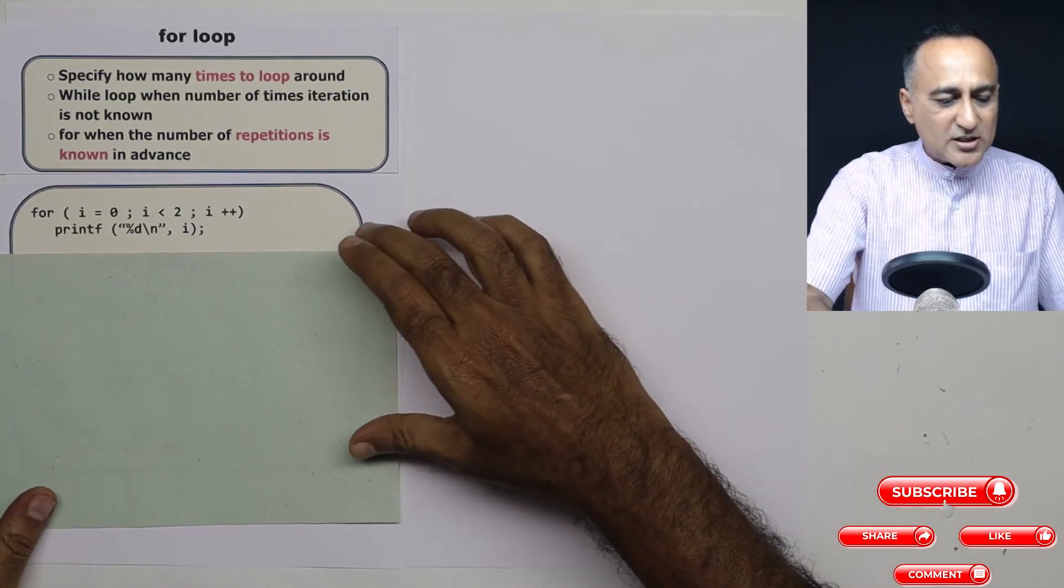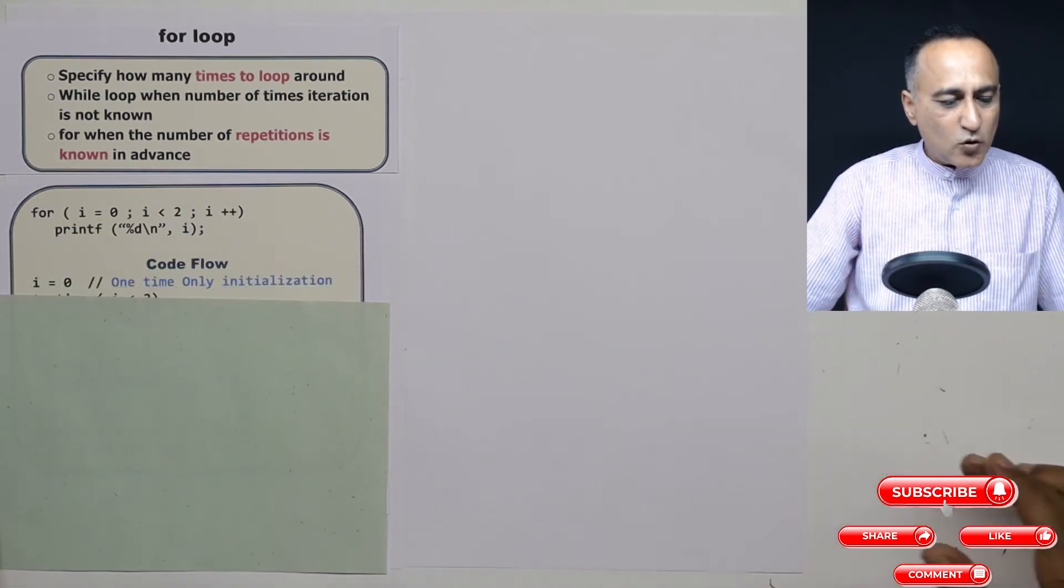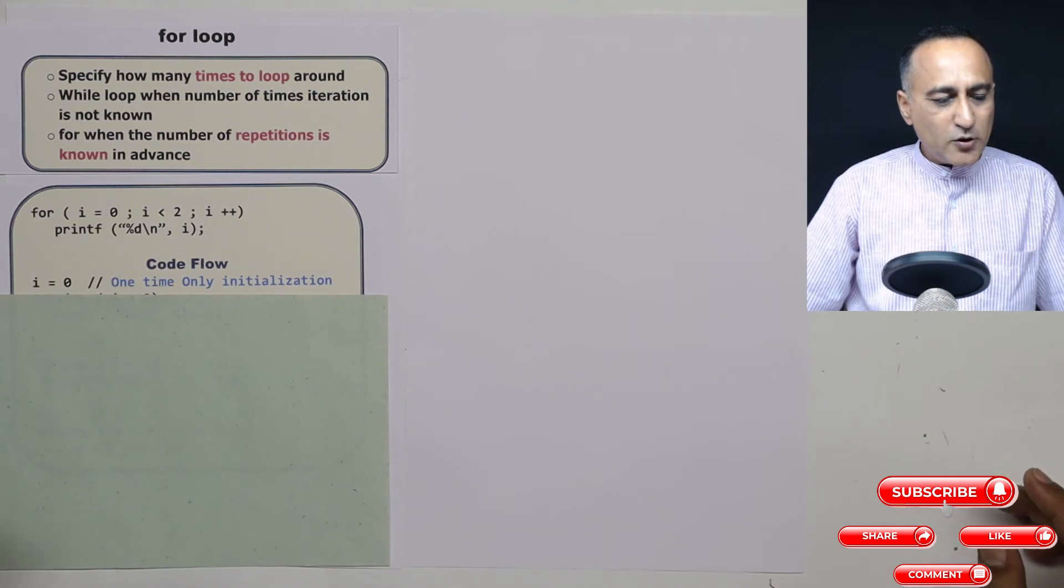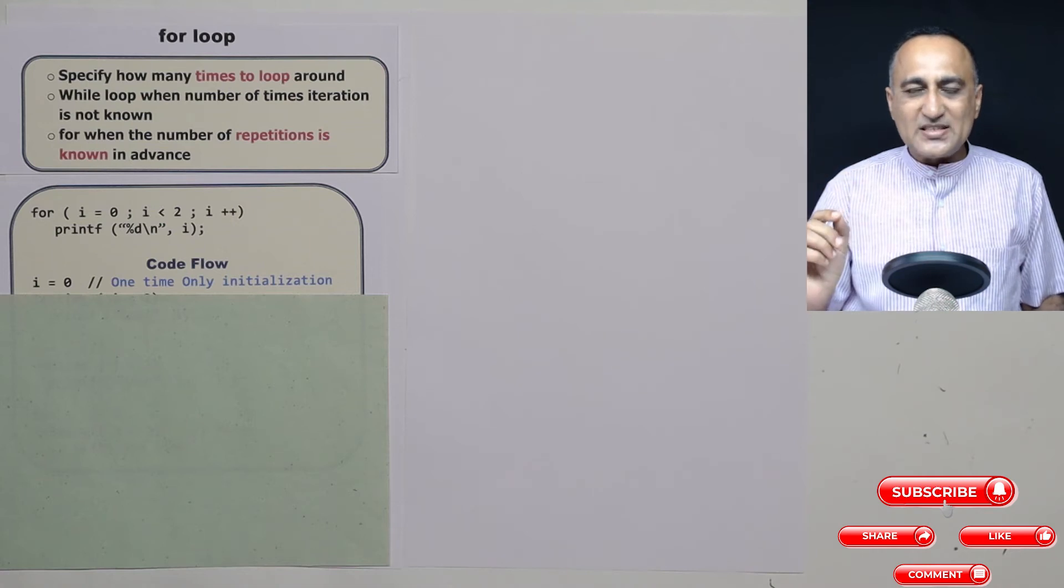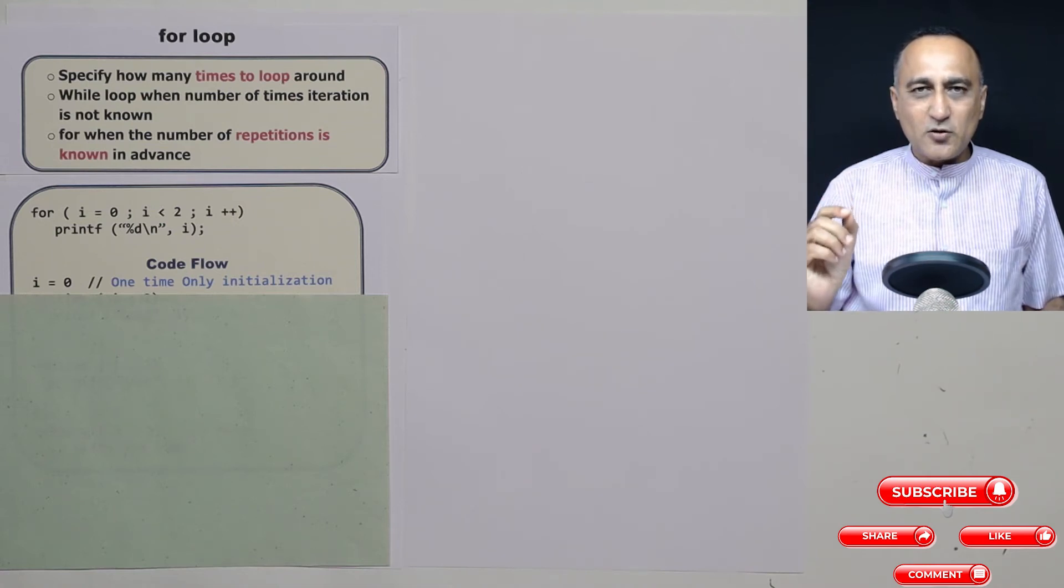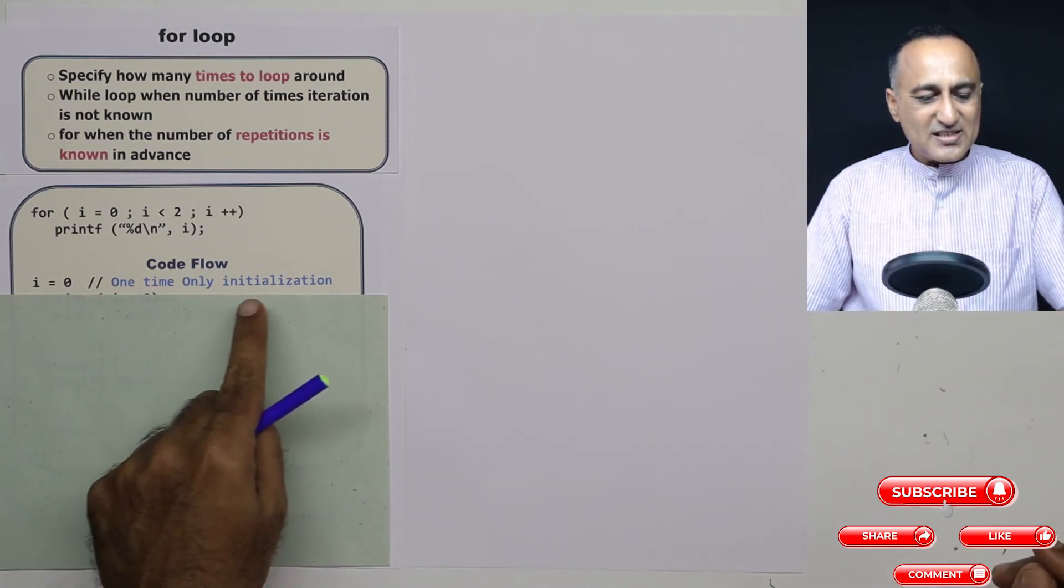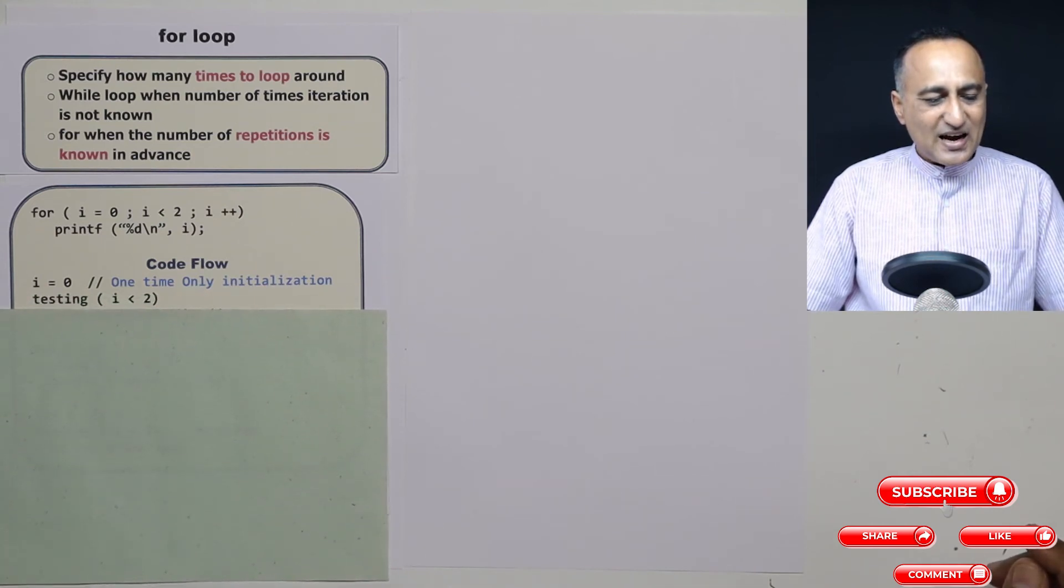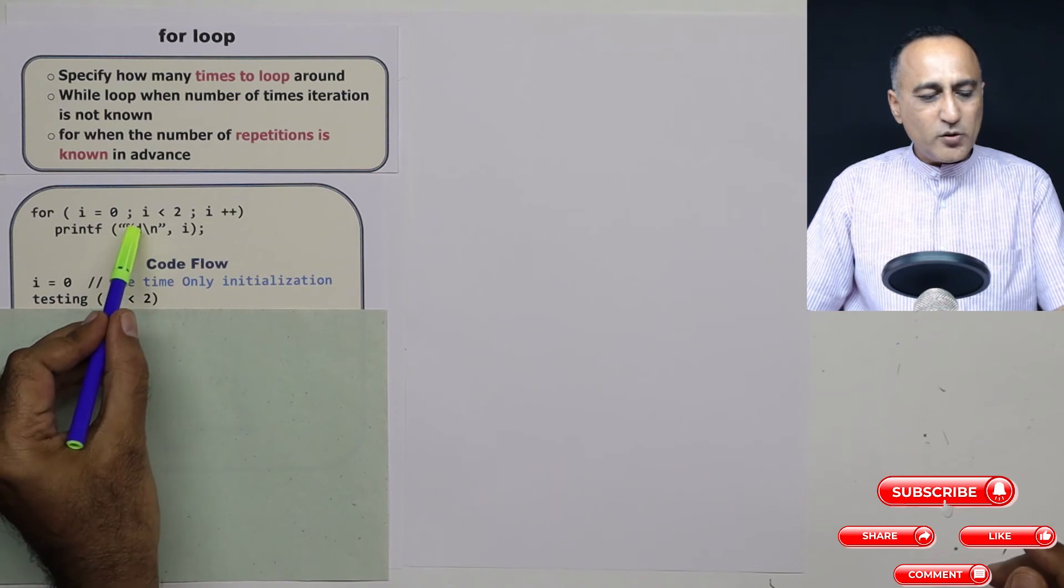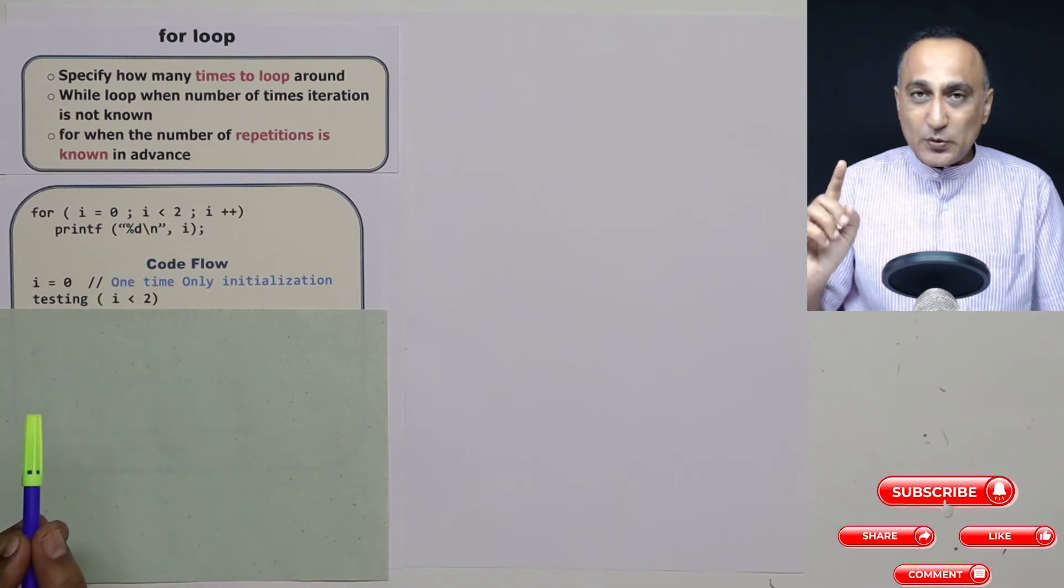So let's try to explore through a code trace or a code flow. As I told you, this i is assigned the value zero will happen only once when the for loop executes for the first time. So this is the initialization statement. Then after the initialization, it will immediately do the testing at the very beginning.